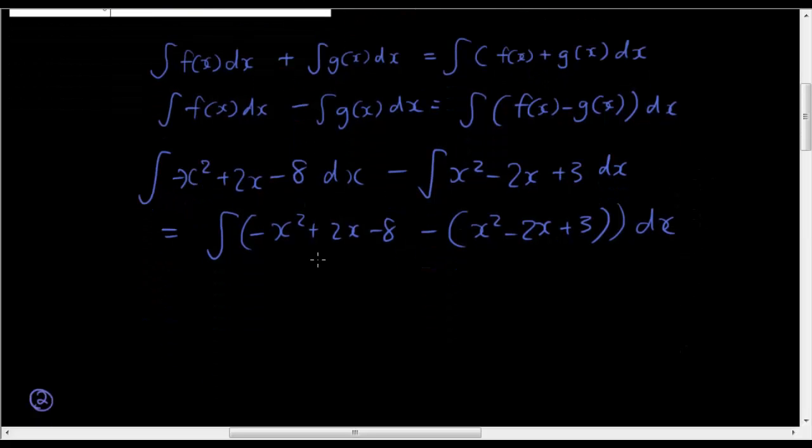So I haven't integrated yet. I'm just simplifying it at the moment. So I've just used the rule to combine the two integrals into one big integral. And now I can simplify the terms inside this integral. So now it becomes negative x squared plus 2x minus 8 minus x squared plus 2x minus 3 dx.